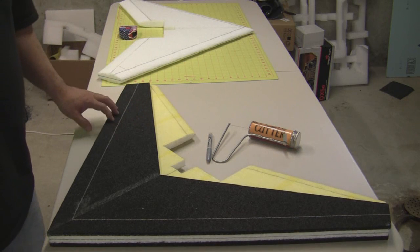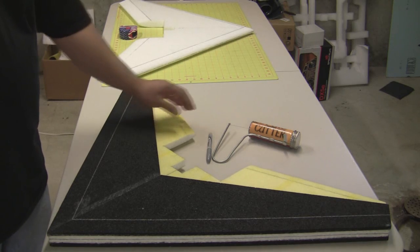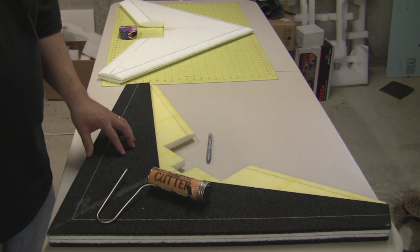All right, we're going to go ahead and start beveling the leading edges on the wing. We're doing this the same way we did on the trailing edge. We're going to cut it first with the handheld hot wire, then shape it with the rasp and sand it with the sandpaper.